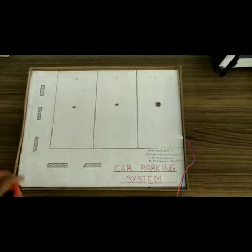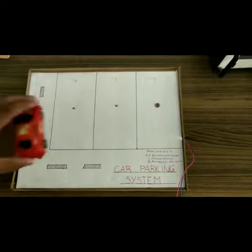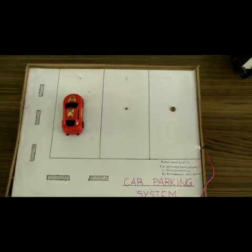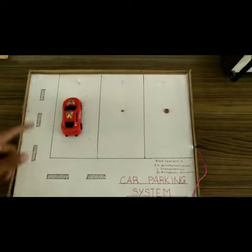When LDR is kept in a dark place, for example, when the car is placed on the LDR, resistance will decrease below 1 kilo ohm and the current starts to flow to the LED and the LED starts to glow.